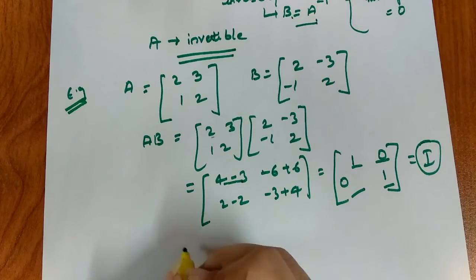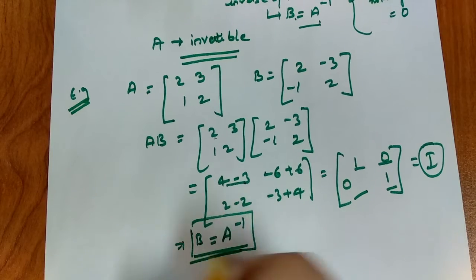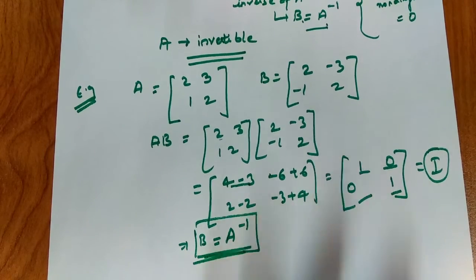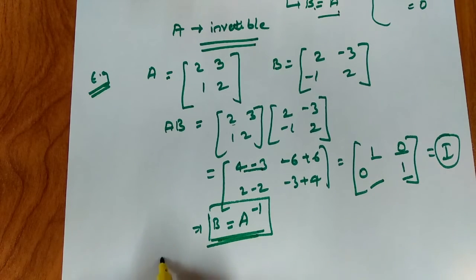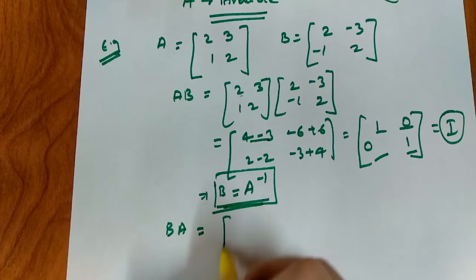What does this mean? This means that B is the inverse of A. It is fulfilled. B is the inverse of A. Now our second condition is to check that BA is equal to the identity matrix.